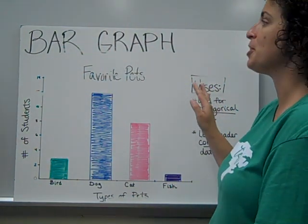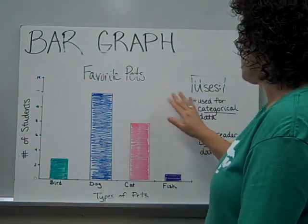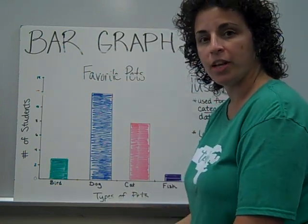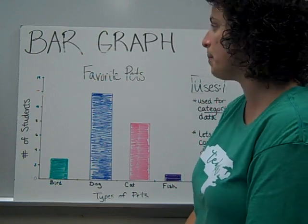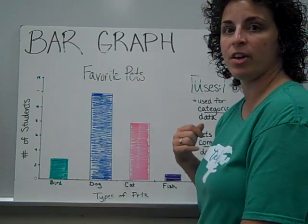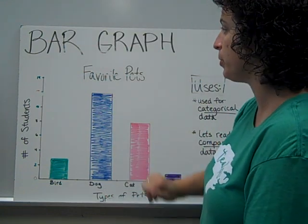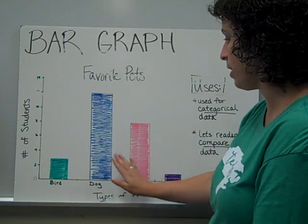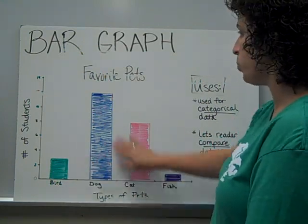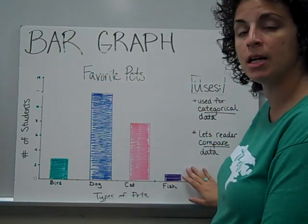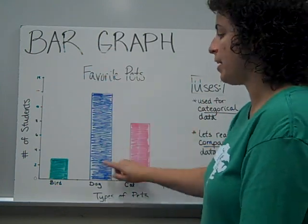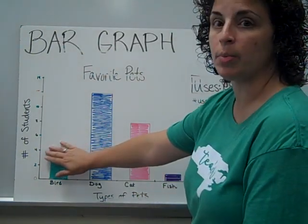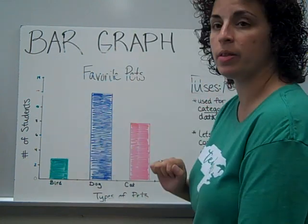Our first graph here is a bar graph. This graph is showing the favorite pet, and a bar graph is used for categorical data. That means that when I was asked a survey question, my answer was a word, not a number. So for example, what's my favorite pet? Well, that would be a dog, so I would be included here in this graph. When I look at this graph, it's very easy to compare these different bars and see which pet was the most popular and which one was the least popular, without even following over to the y-axis.